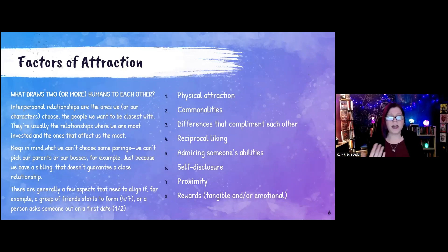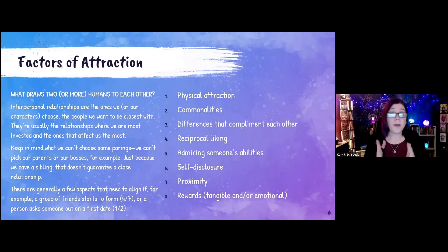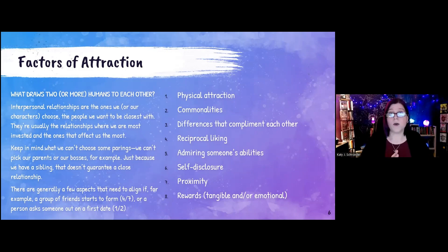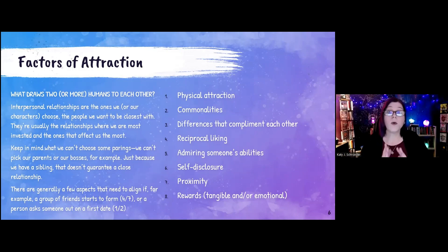In these interpersonal relationships, I always say that these are relationships that we choose — the people that we want to be close with, that we want to spend time with. Because some pairings we can't help. When you look at families, some people believe we're blood, so that automatically makes us have this relationship. Well, that doesn't just happen. Sometimes there are toxic siblings or toxic parents, or relatives who aren't close. We can't pick our bosses, we can't pick our coworkers. So just because we're put together in a room or in a life situation, that doesn't guarantee us a relationship.